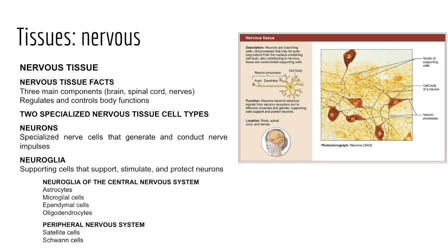We now move to nervous tissue, the fourth and final tissue group. Nervous tissue can be found in three main components: the central nervous system, comprising the brain and spinal cord, and the peripheral nervous system, where we find it in nerves. So brain, spinal cord, and nerves are our three main components.